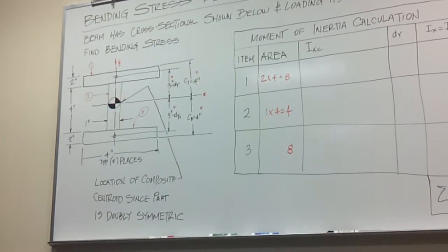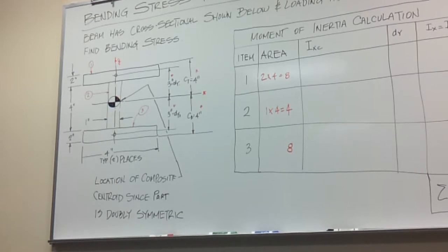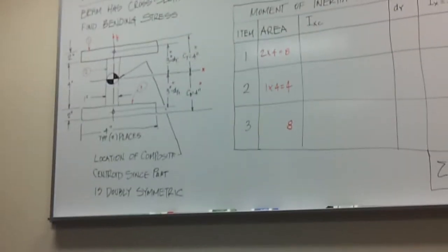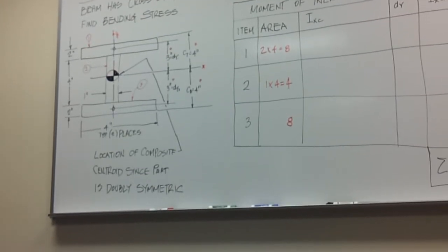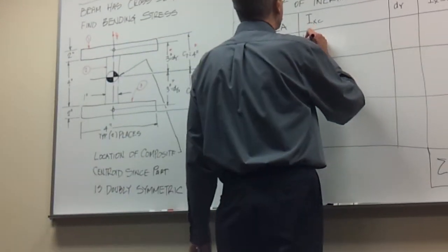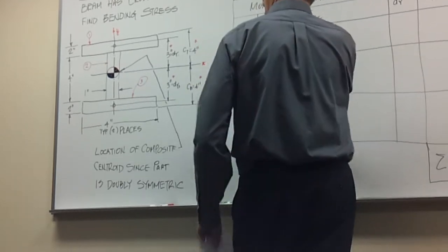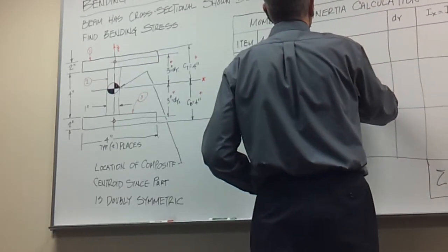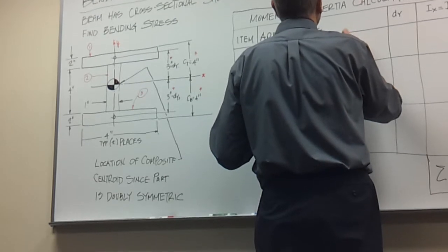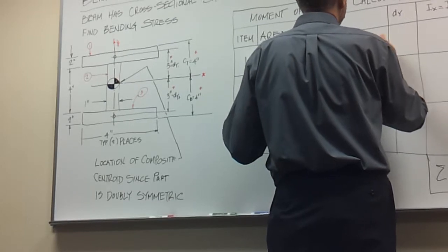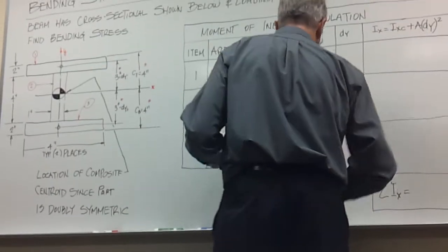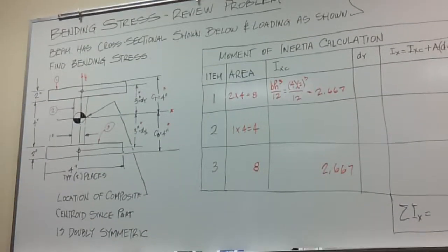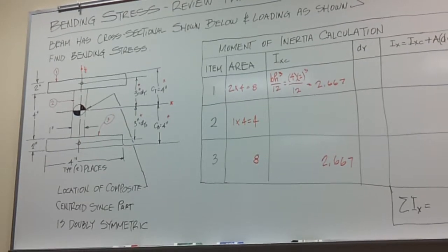For a rectangle, what's the formula for moment of inertia? BH cubed over 12, right? This one here is BH cubed over 12. What's the base on this one? 4. 4 is the base in this case. 4 times 2 cubed over 12. This comes to 2.667. Remember that if you're looking at the x-axis, the height was always perpendicular to the axis.